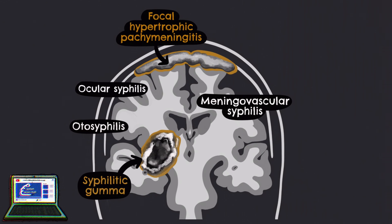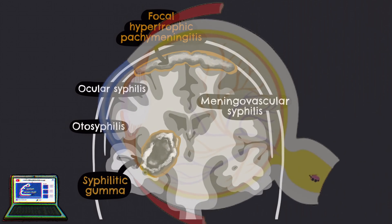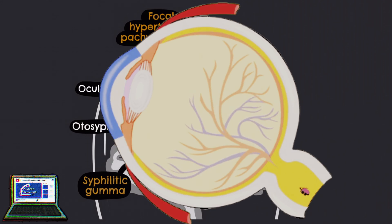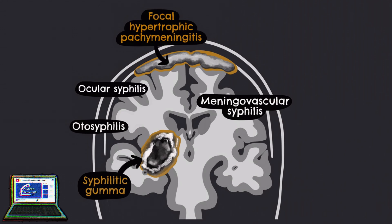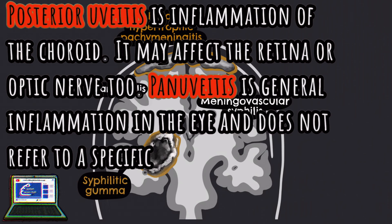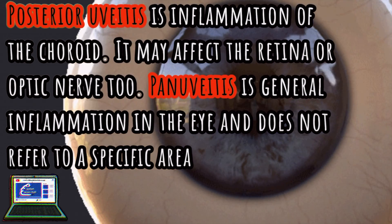Moving from the ears to the eyes, we have ocular syphilis — an inflammation of the eye caused by syphilis. Ocular syphilis can involve almost any structure in the eye and can present with a range of visual field defects. Most commonly, it causes posterior uveitis and panuveitis.